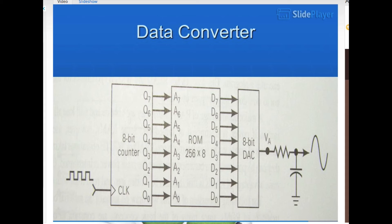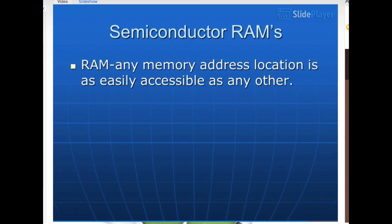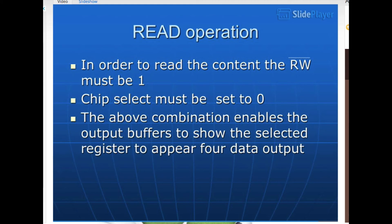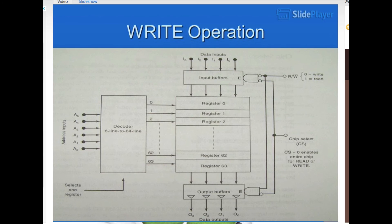Semiconductor RAMs. RAM, any memory address location is as easily accessible as any other. RAM architecture. 1K, 4K, 8K, 16K, 64K. Word size is 1, 4, 8 bits. Read operation. In order to read the content, the RW must be 1. Chip select must be set to 0. The above combination enables the output buffers to show the selected register to appear for data output. Write operation.